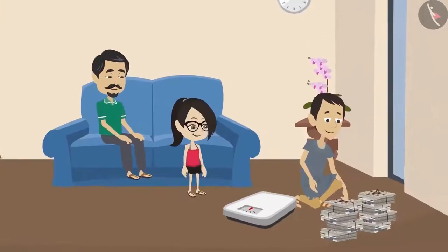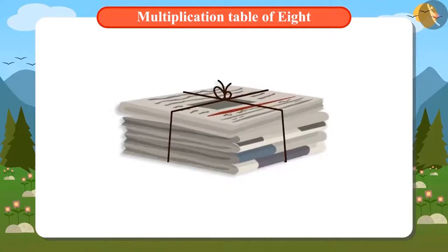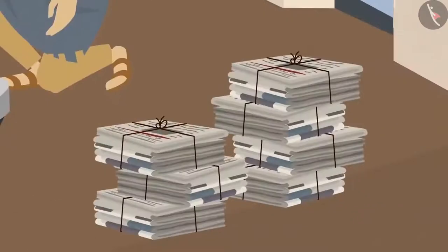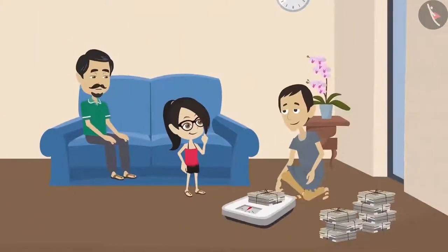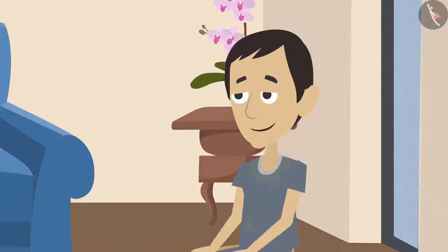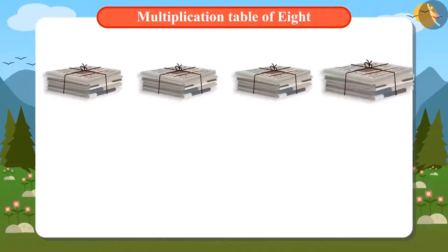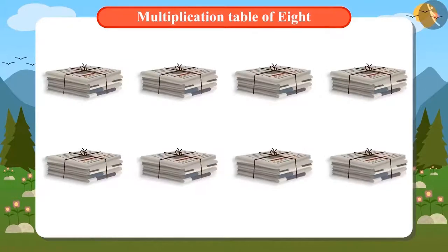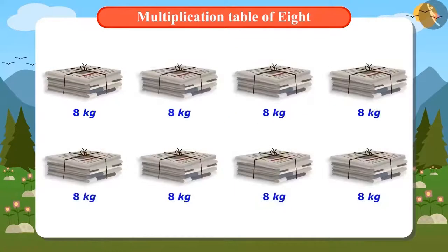The scrap dealer puts one bundle of newspaper on the weighing scale. One bundle of newspaper weighs 8 kilograms. Vandana wants to weigh all the remaining bundles as well, but the scrap dealer tells her that not all bundles need to be weighed — each bundle would weigh the same 8 kilos. There are 8 bundles of newspapers in total. If one bundle is 8 kilos, can you tell us how many kilos of newspapers there are?